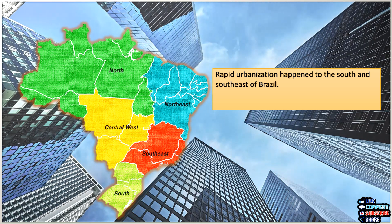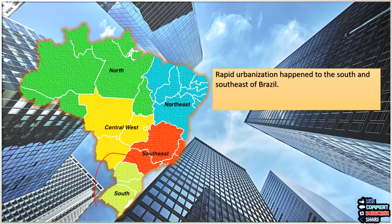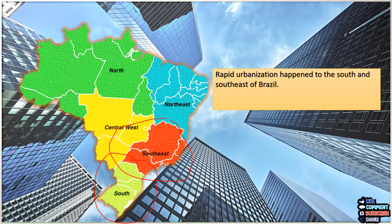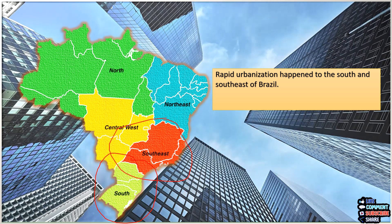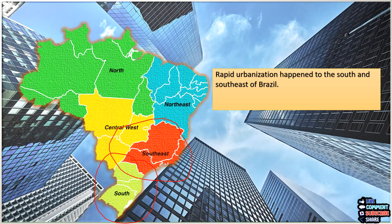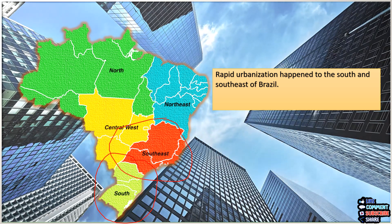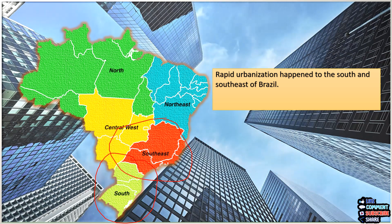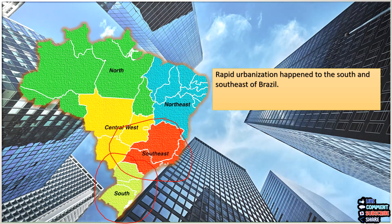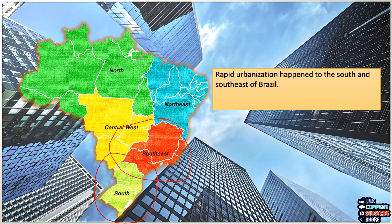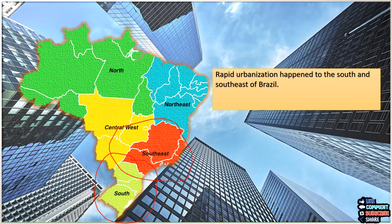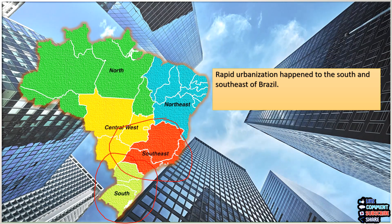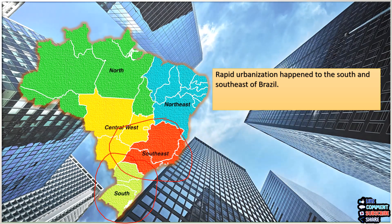Rapid urbanization happened to the south and southeast regions of Brazil. The reasons are: availability of water, fertile soil, richness in minerals, excellent transport facilities, and good climate. Due to all these favorable factors, the concentration of population is more in these regions.